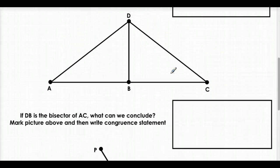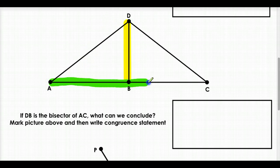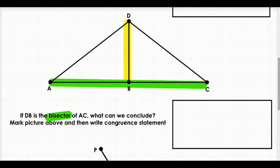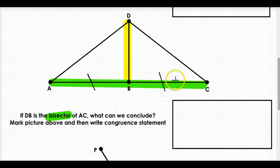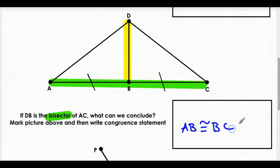Second example: if dB is the bisector of AC, then dB bisects — cuts in half — AC. So we know AB is congruent to BC. dB cut it in half, so those two parts are equal to each other. The congruent statement is: AB is congruent to BC.